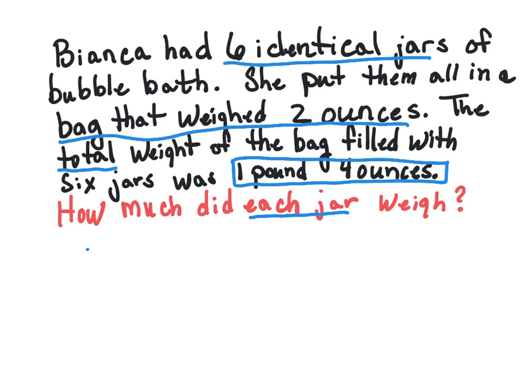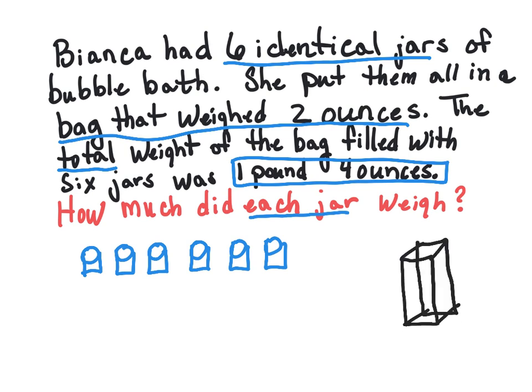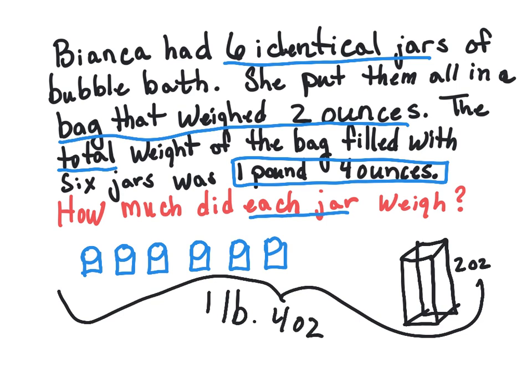And she put them all in a bag. And the bag weighed 2 ounces. But the total weight of the bag filled with all the six jars was 1 pound and 4 ounces. And the thing is, is we have to figure out is how much did each jar weigh. So what we should do is we're going to, maybe we can draw some pictures here. So I'm going to draw some sad looking cans. All right. So we have six cans here. Okay. And remember the bag. All right. Well, and here's my little bag. Sorry, not great, but the bag was definitely 2 ounces. That's how much the bag weighed.